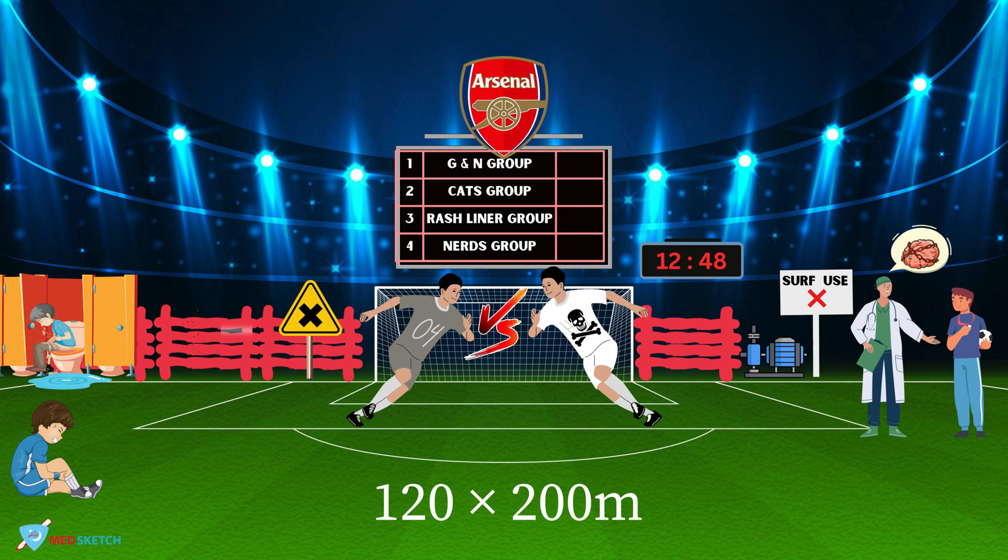The Cats group represents the stage of catarrhal changes: feeling of a common cold, running nose, headache, watery eyes, conjunctivitis, cough, fatigue, hoarse voice, eruption of skin, and inflammation of mucous membranes. The third group, Rash-liner, is related to the stage of skin rashes.